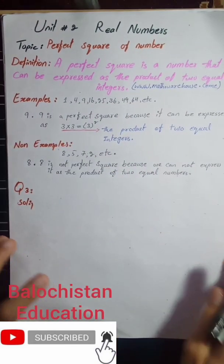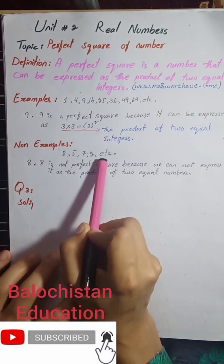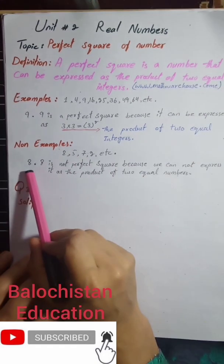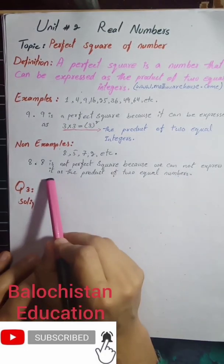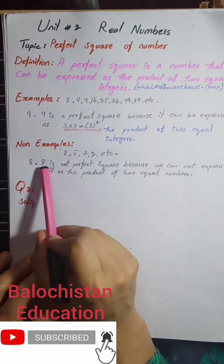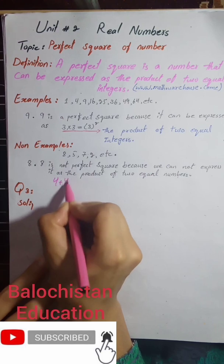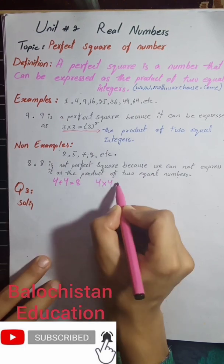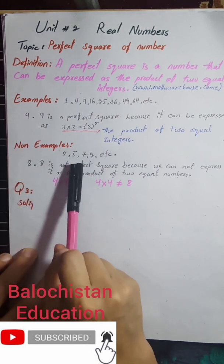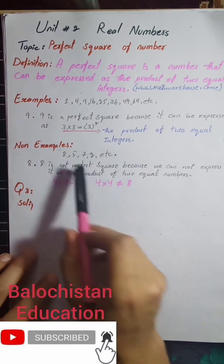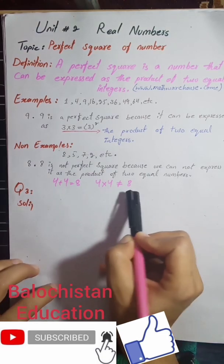Square of three is equal to nine, so nine is a perfect number. Now, which numbers are non-perfect squares? Examples of non-perfect squares are 8, 5, 7, 2. See how 8 is a non-perfect square — we cannot express it as the product of two equal numbers. Four plus four equals eight, but four multiplied by four is not equal to eight. Any equal integers you take will not give you 5, 7, or 2, because multiplying two similar equal integers cannot produce these numbers.